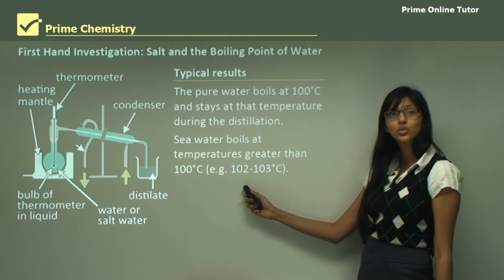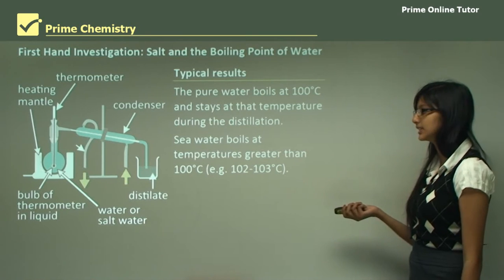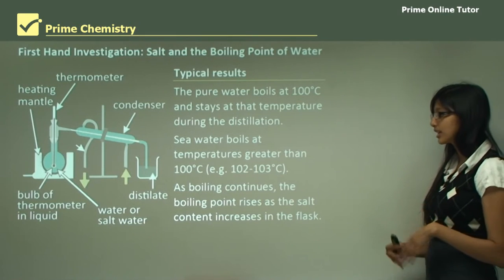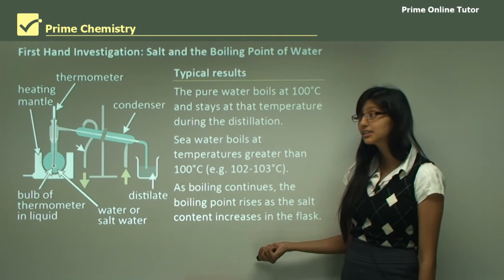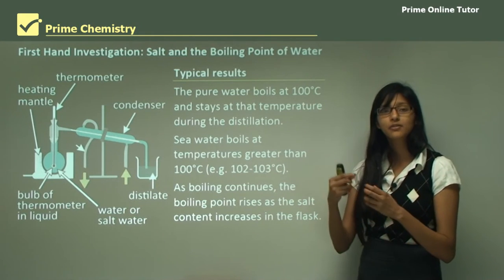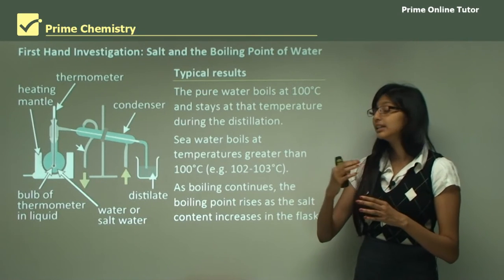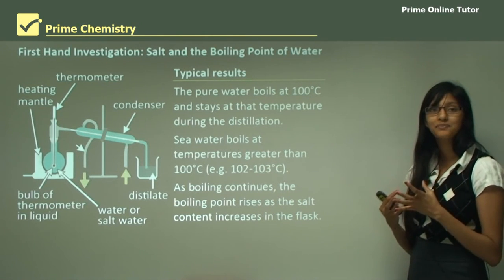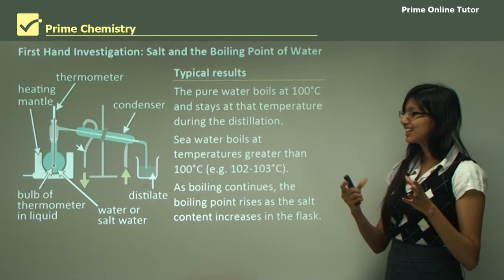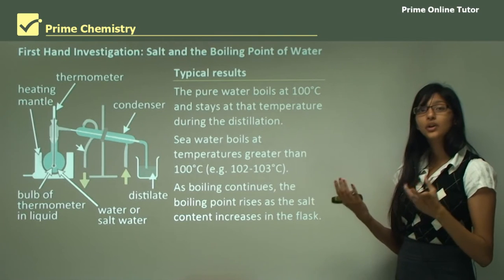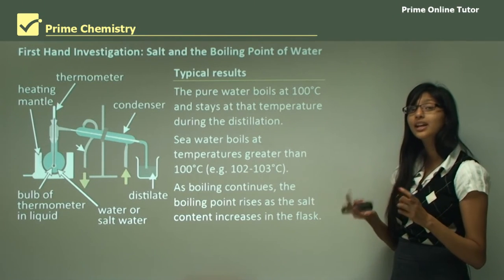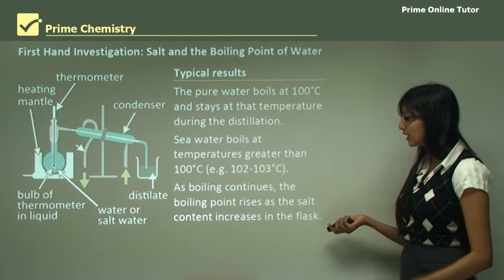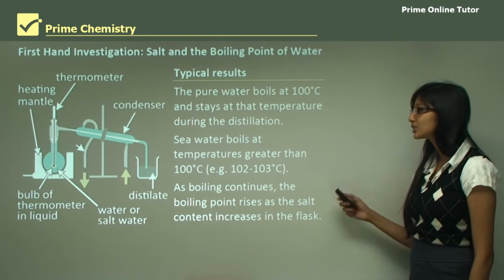As boiling continues, the boiling point rises as salt concentration increases in the flask. The salt concentration increases because when you are boiling water, some of the water evaporates and escapes to the collecting beaker, but the salt remains behind. Therefore the concentration of salt increases over time because the amount of water is decreasing while the amount of salt stays the same, and because of this the boiling point keeps rising.